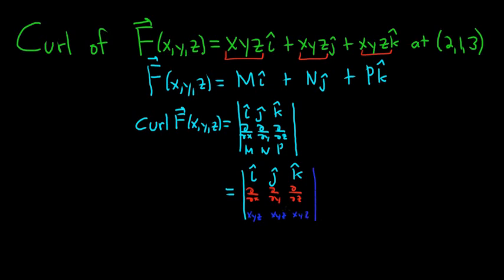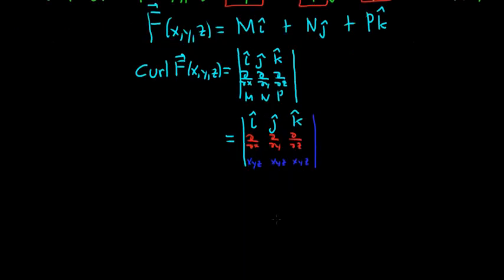All we have to do now is compute the determinant and plug in the numbers after we take the derivatives. When computing a determinant it's plus, minus, plus. So it's plus i-hat — crossing out the first row and first column — giving us: ∂/∂y of (xyz) minus ∂/∂z of (xyz).